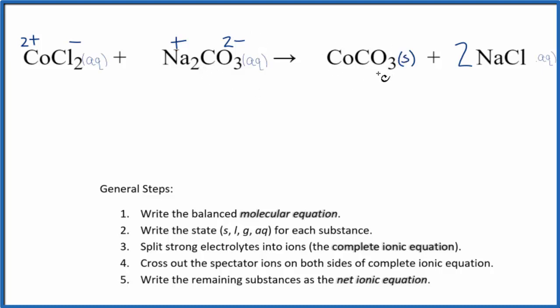This is a solid, so we're not going to split that up. It's actually a precipitate, it's fallen to the bottom of the test tube, so in our net ionic equations, we don't split the solids up, and then we have a positive and a negative.